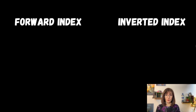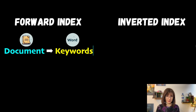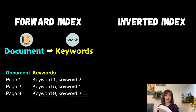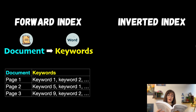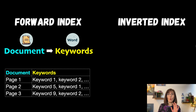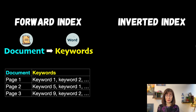The first approach is the so-called forward index. You can map each document to the set of keywords that it contains. Using this book as an example, you know that on page 157 I can find sections talking about service discovery and domain name system. So in this way I can go page by page looking for what I need.